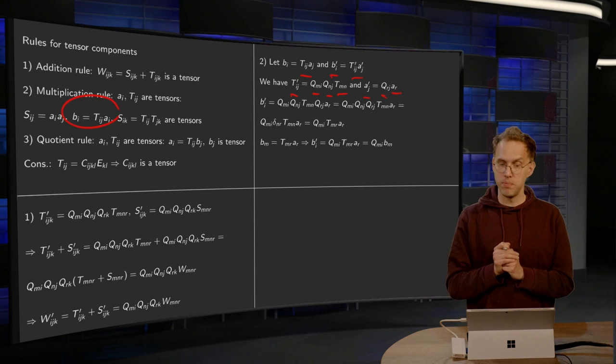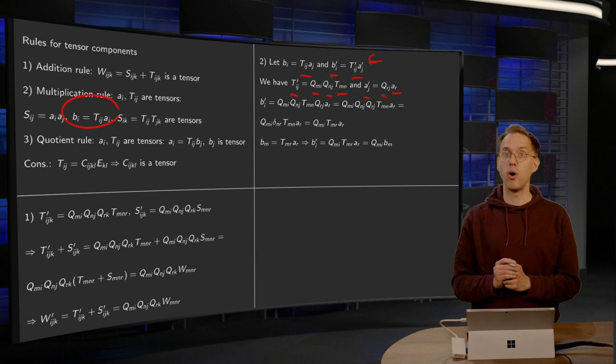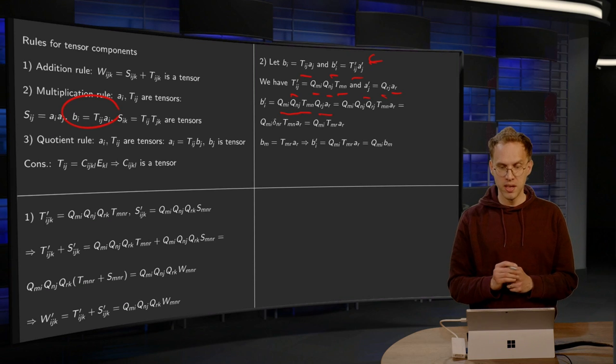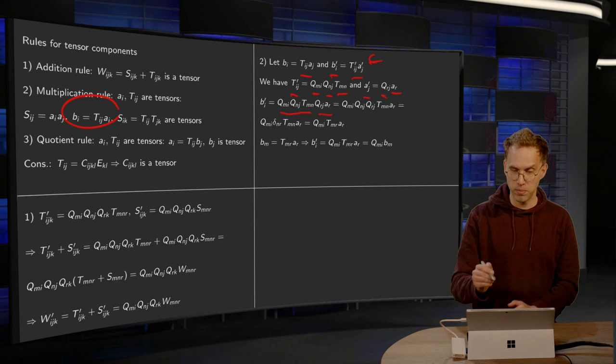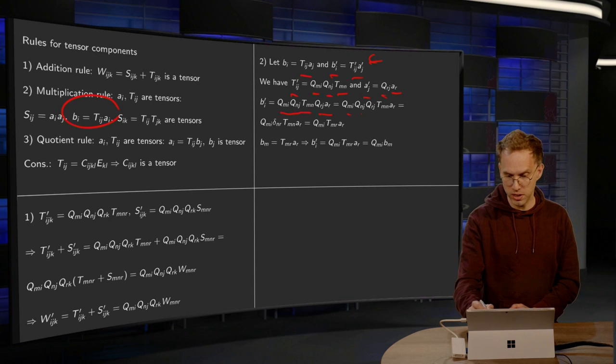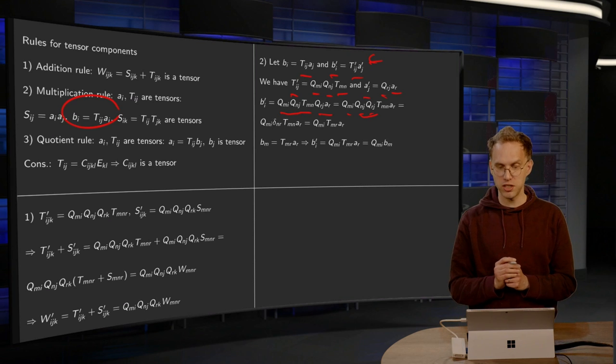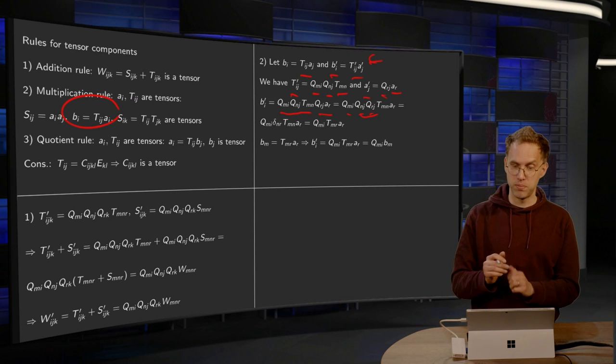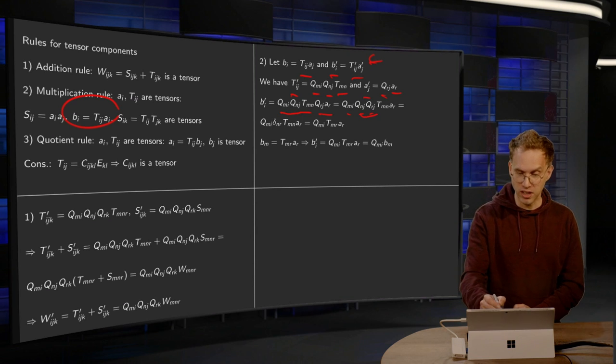Then we can compute bi prime, because we have the equation over here. Just put all the Qs there, so for the Tij prime is here, and the aj prime is over here, and then take all the Qs in front, those Qmi and so on, they are just numbers, so we have Qmi, Qnj, Qrj. These two are nice, they have a repeated index, Qnj, Qrj, but they are orthogonal, so that means that Qnj times Qrj, summing over the j, gives delta nr.